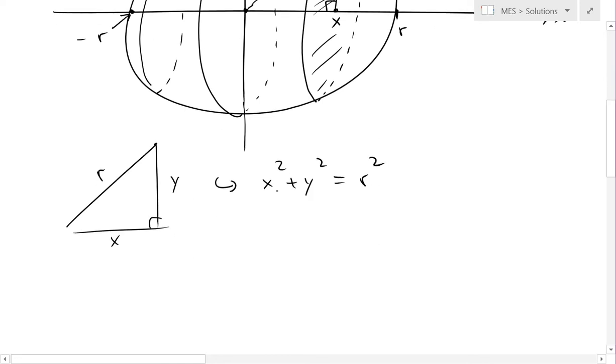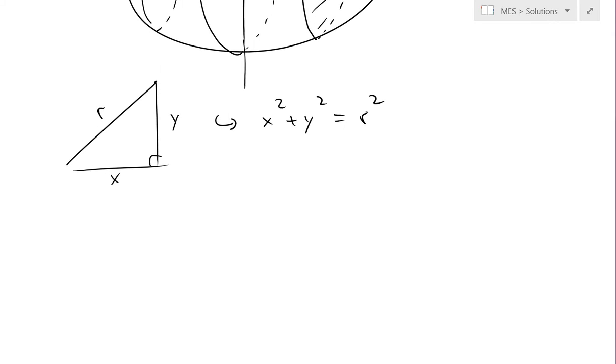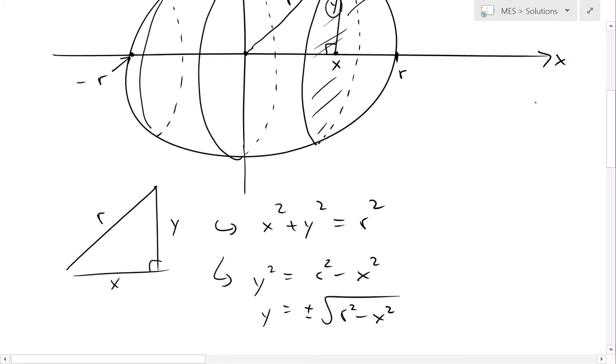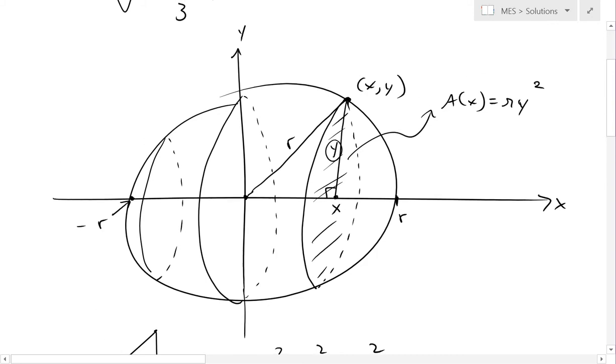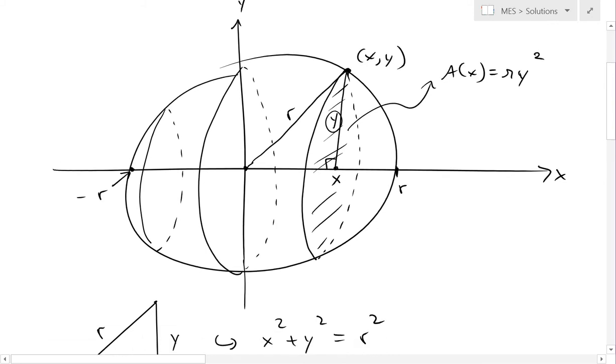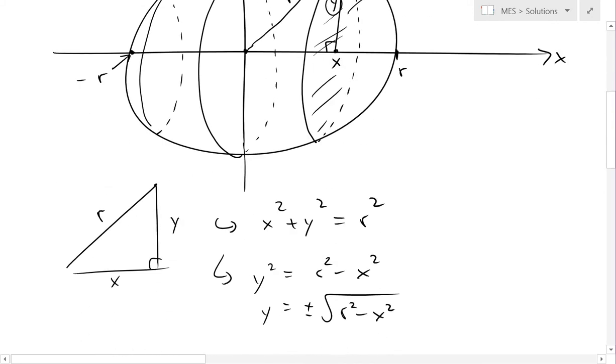You can see the proof for this in the video link below. Basically when we have this, now we can solve for y. y squared is equal to r squared minus x squared. y is equal to plus or minus square root of r squared minus x squared. In this case we won't even actually need to use this, I'll show you why, because we have this y squared.